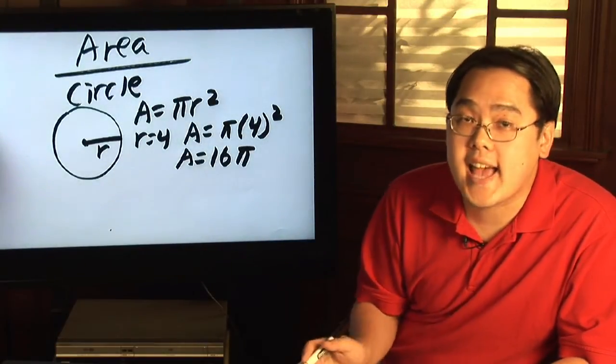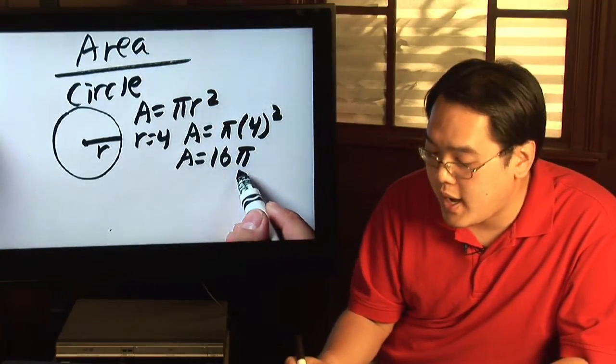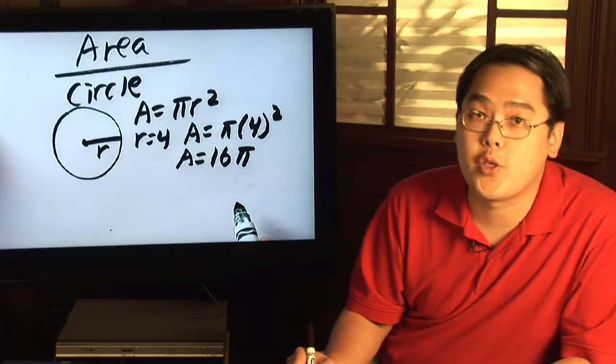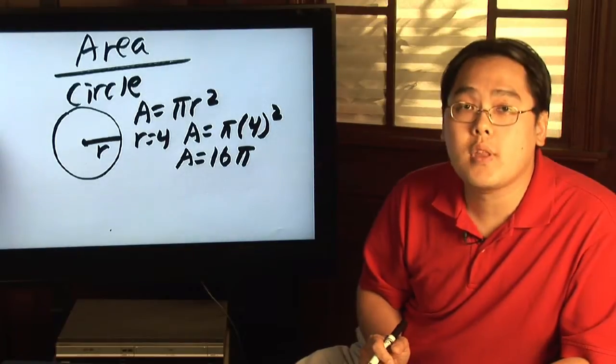Now that is the exact number of units for area, but if you want you can get an approximation by letting pi equal to approximately three point one four, and you'll get a more decimal representation of the area.